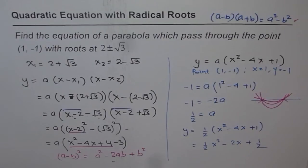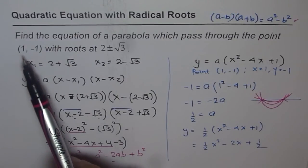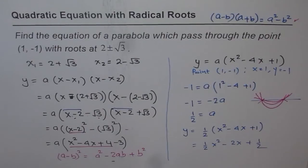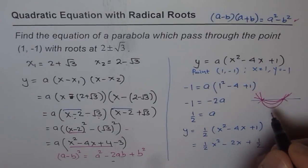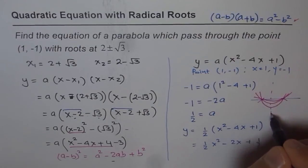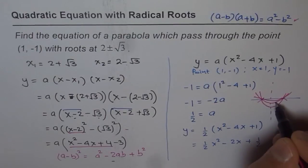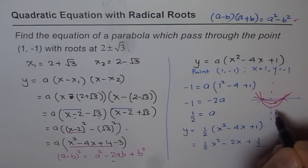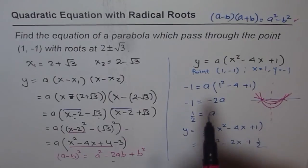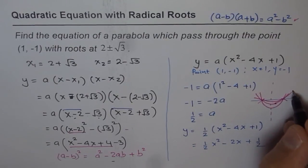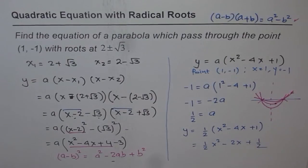The specific parabola we want is the one passing through point (1, -1). To find its equation, we substitute that point to get the value of a. This gives us our specific parabola. I hope you understand the process and method. With that, I think you are well prepared for the test — I wish you all the best. Thank you.